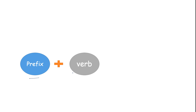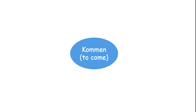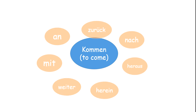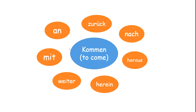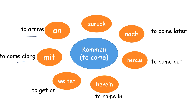Let's see how it works. Prefix plus verb gives us a new word or new meaning of the sentence. Let's see some of the common prefixes and how they change the verb. Like we have the verb 'kommen', to come. We have different prefixes: 'ankommen' — to arrive; 'mitkommen' — to come along; 'weiterkommen' — to get on; 'hereinkommen' — to come in; 'heraus' — to come out; 'nachkommen' — to come later; 'zurückkommen' — to come back. So different prefixes with the verb give a different meaning.